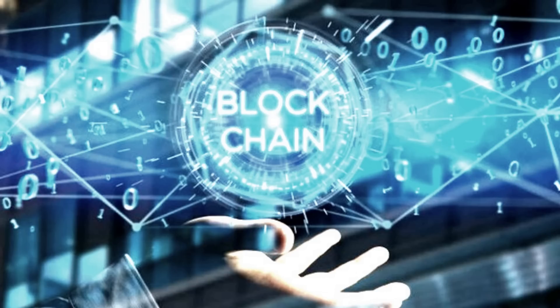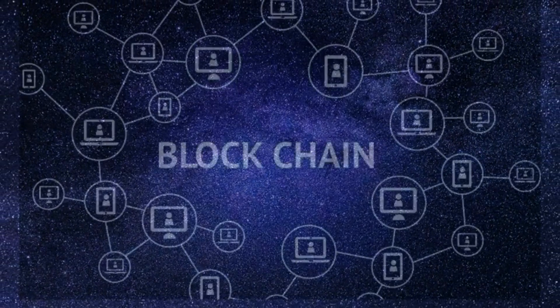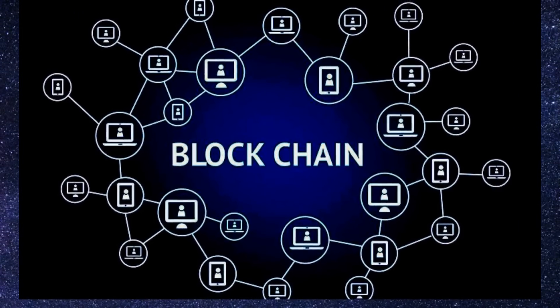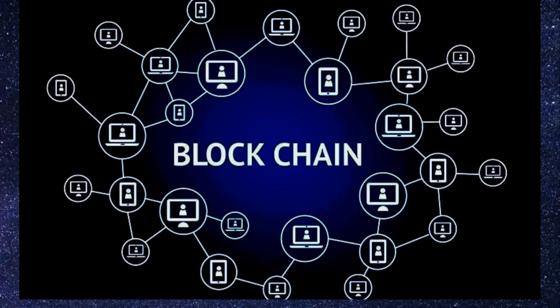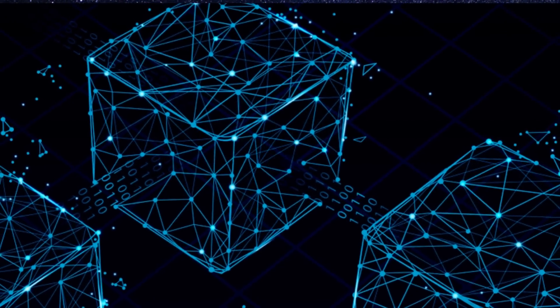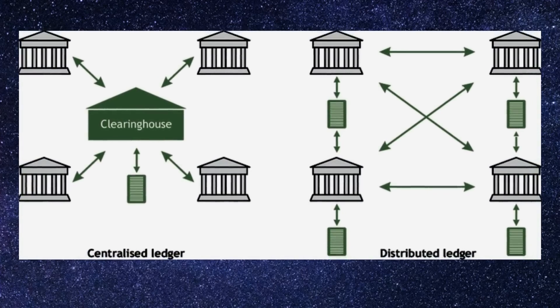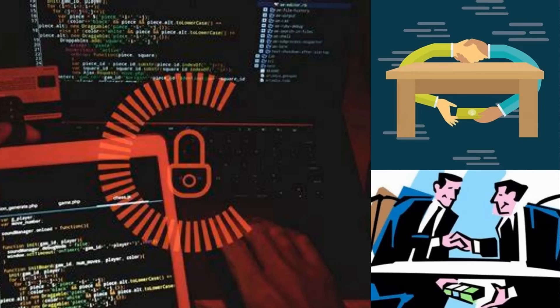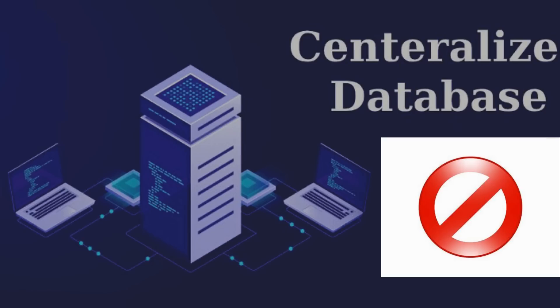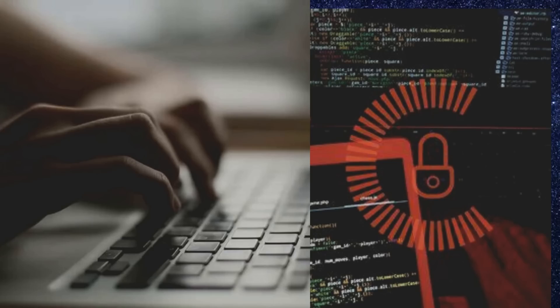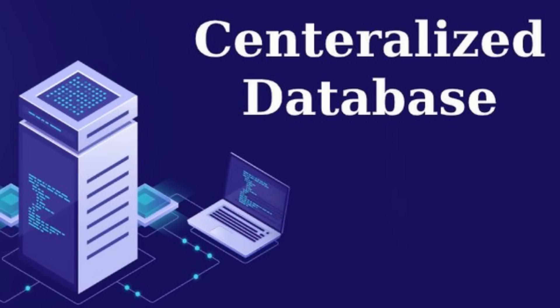A blockchain is a decentralized, distributed and public digital ledger that is used to record transactions across many computers so that the record cannot be altered retroactively without the alteration of all subsequent blocks. Prior to the usage of blockchain, there were a lot of illegal under-the-table corruption such as illegal black money transactions. It is for sure that these transactions would be stored somewhere in a database, so we cannot consider these databases reliable, as we do not have permission to access them and they can also be altered or changed by the admin whenever they want. It was due to the centralized system of the database or ledger where one person has the authority to control and manipulate it.